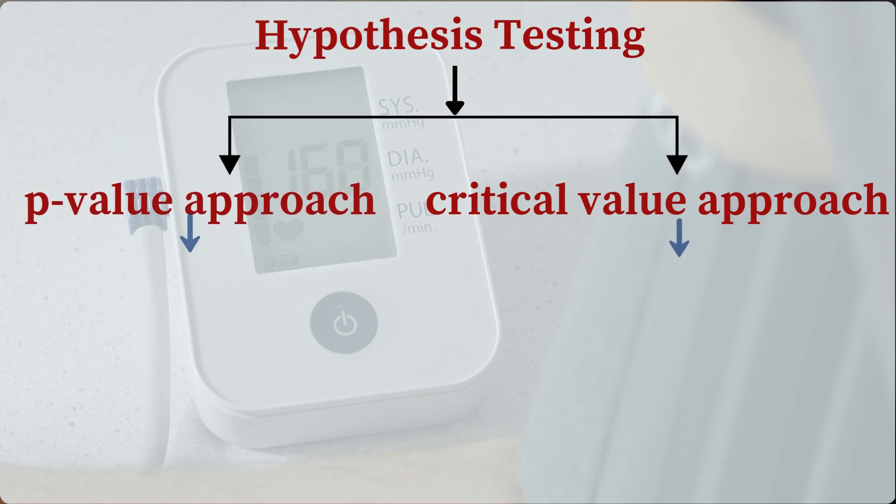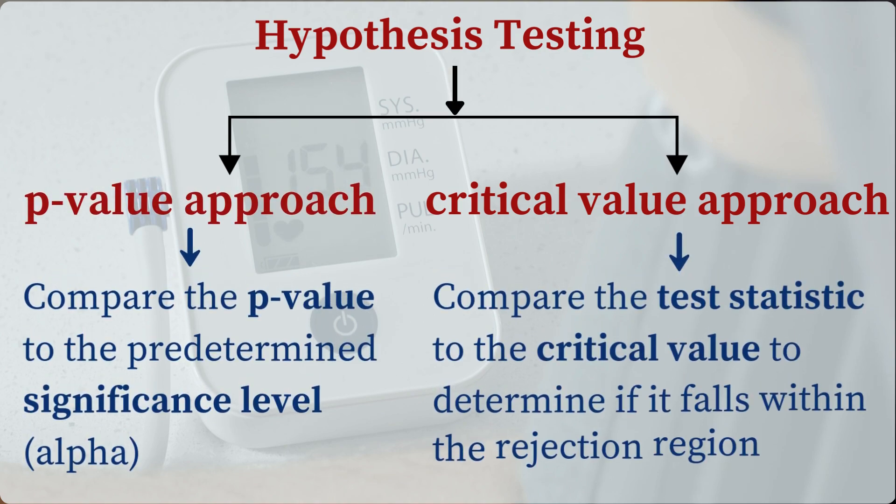Both the critical value approach and the p-value approach lead to the same conclusion regarding the null hypothesis, though they frame the decision differently. The choice of which method to use often depends on personal preference or the specific requirements of the research.